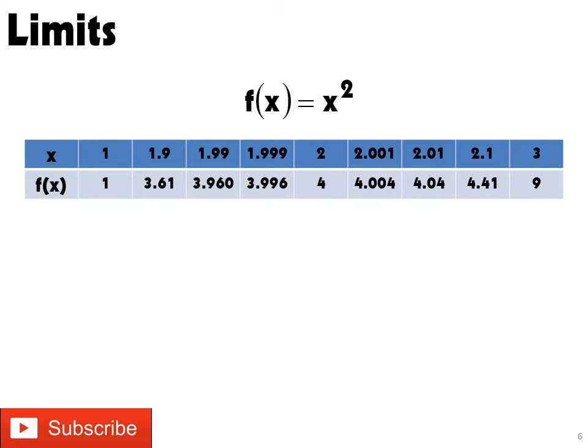Consider the table of values shown here for f of x equals x squared, where x shows values getting closer and closer to 2, from the left and from the right.